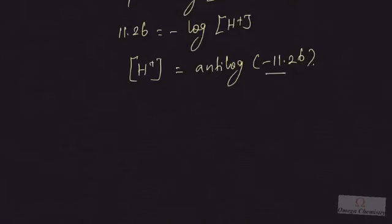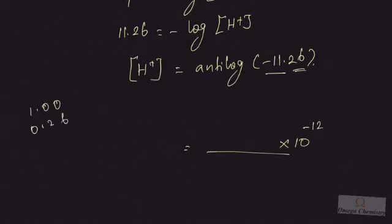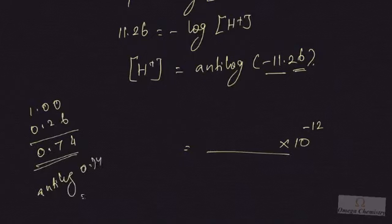Using Method 2: add minus 1 to the characteristic, so 10 to the power of minus 11 plus minus 1 equals 10 to the power of minus 12. Subtract the mantissa from 1: 1.00 minus 0.26 gives 0.74. Taking antilog of 0.74 from the table gives 5495. Placing the decimal point after the first digit gives 5.495. Therefore, H⁺ ion concentration equals 5.495 × 10⁻¹² mol per liter.